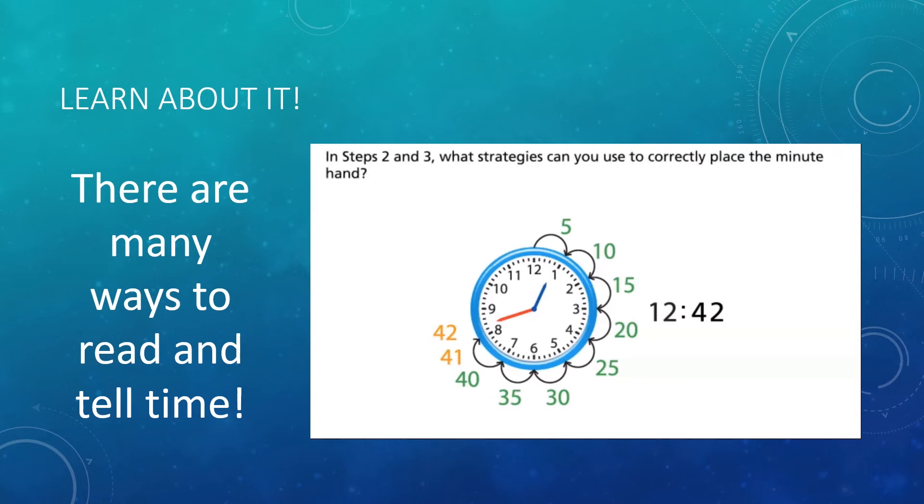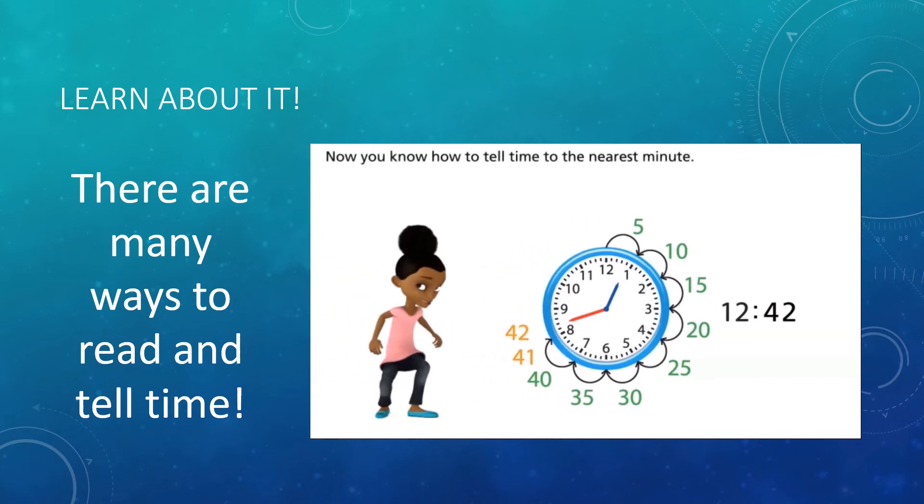In steps 2 and 3, what strategies can you use to correctly place the minute hand? Count by fives from the 12 to the 8, and then count by ones to show 42 minutes after 12. Now you know how to tell time to the nearest minute.